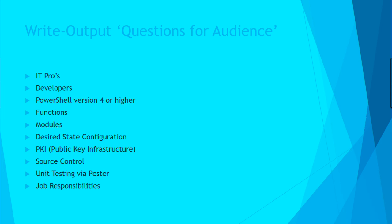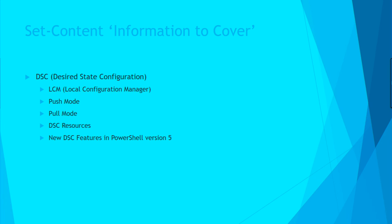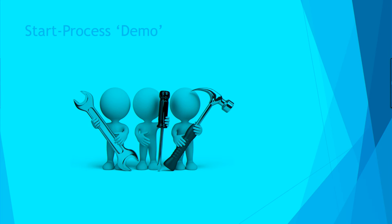Unless things change — like from PowerShell version 4 to 5 with DSC, there are some differences. I try to make my tools version-agnostic so it doesn't matter what version you're using. The content we're going to cover in this session: DSC and Desired State Configuration, the local configuration manager, push mode, pull mode, DSC resources, new features in PowerShell version 5 as far as DSC goes, functions, modules, tool making, and automation. It's not a deep dive into any one of those topics, but we'll touch on each one. So it's time for the demo.